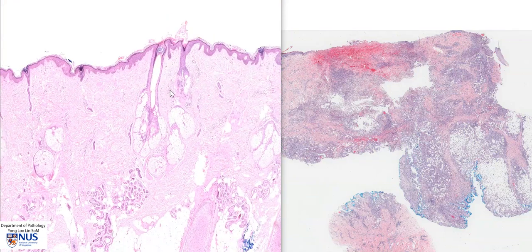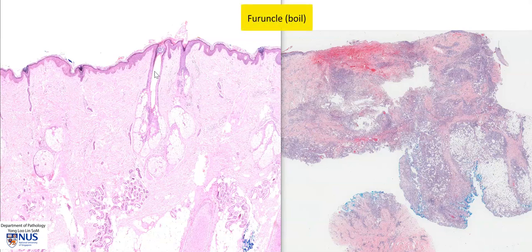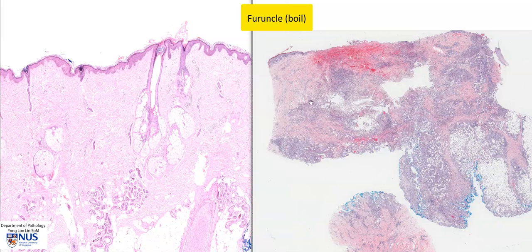When we have an infectious process involving a hair follicle, giving rise to acute suppurative inflammation of the follicle, this is called a furuncle. Sometimes we can have several hair follicles that get infected, and then the acute suppurative inflammation can spread over a larger area across a whole expanse of the dermis, as well as deep to the subcutis, and that is known as a carbuncle.